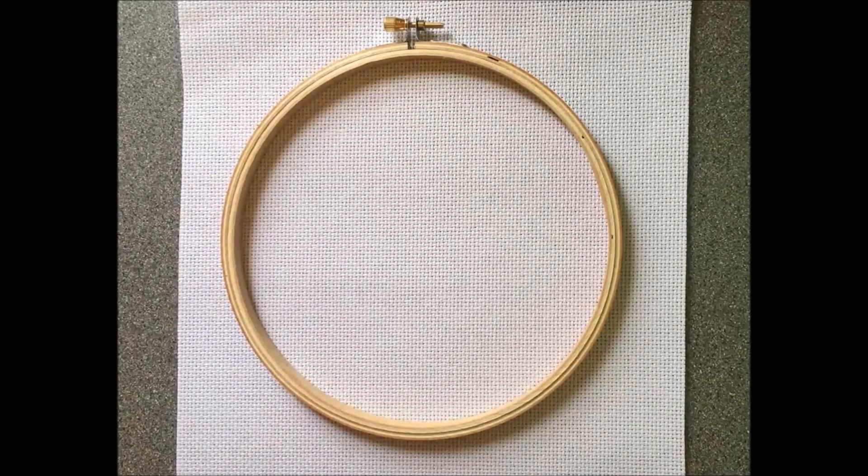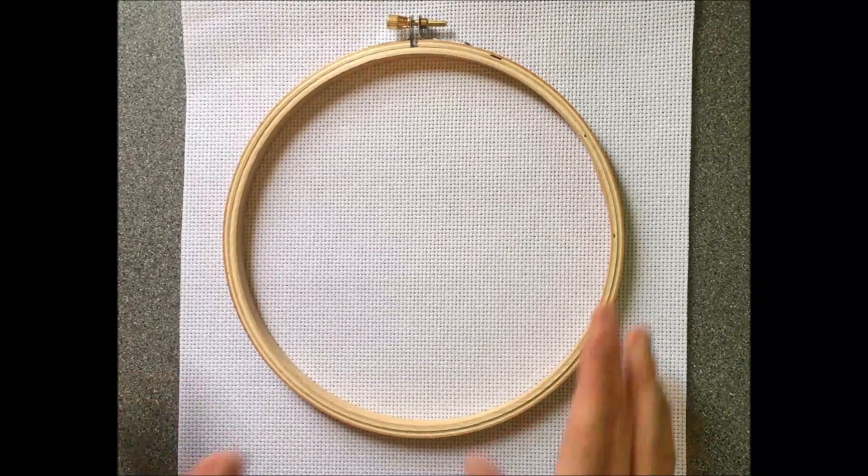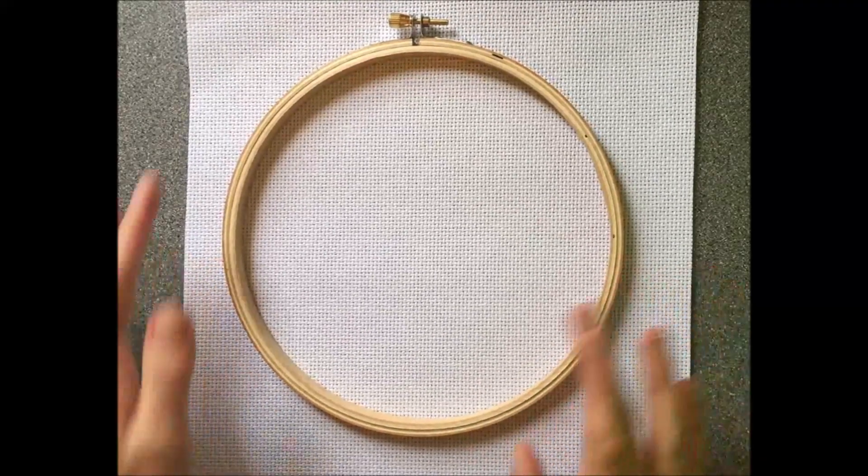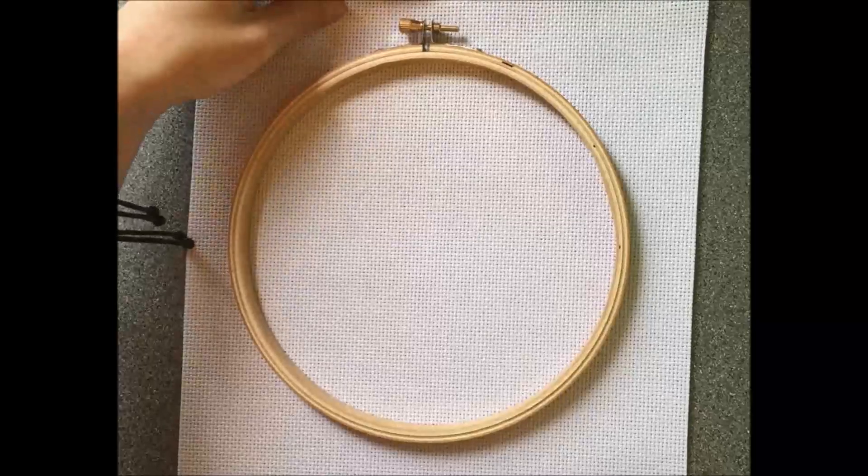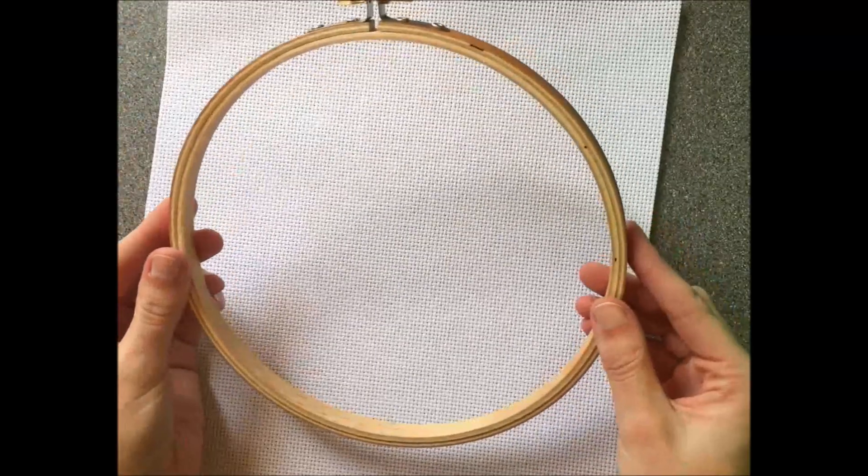So for this tutorial you'll need cross stitch cloth, cut about an inch or two wider on each side of the hoop that you're using, and an embroidery hoop.